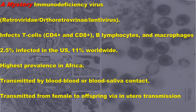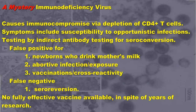The prevalence is 2.5% in the US and 11% worldwide. The highest prevalence is in Africa. It's transmitted by blood-to-blood or blood-saliva contact, and from female to offspring via in utero transmission. It causes immunocompromise via depletion of CD4-positive T cells.